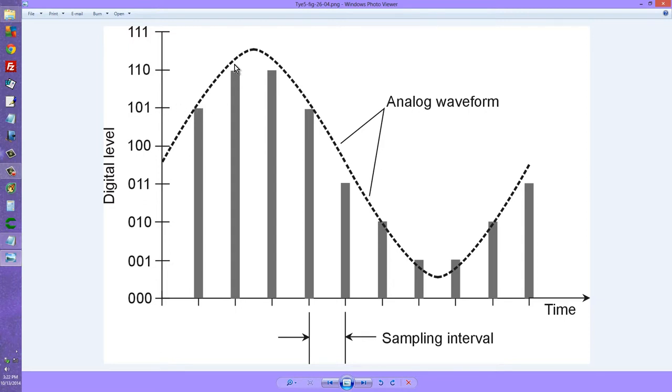So, for example, here, the analog waveform is closest to 1, 1, 0. Again, here, it's closest to 1, 1, 0. Here, it's closest to 0, 1, 1. Down here and here, it's closest to 0, 0, 1. And so on and so forth.